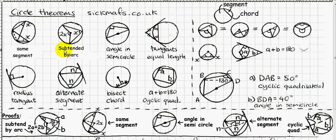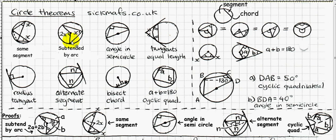Subtended just means sort of anchored down. Your angle here is subtended by this arc — an arc being a part of the circumference. Both lines that form the angle end on the arc, so the angle is made by those two lines ending on the arc.